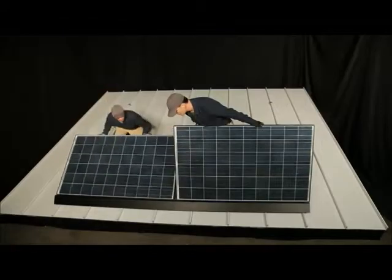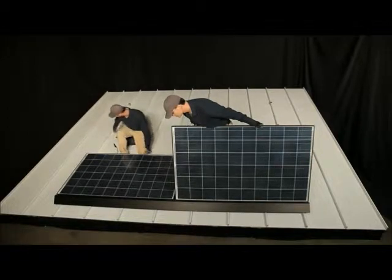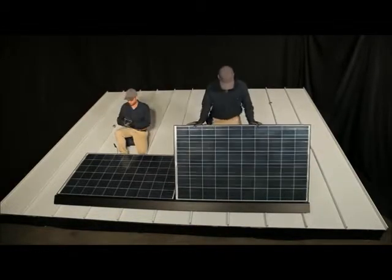Then, pivot the modules downward while applying pressure down roof, causing the module groove to seat on the tongues of the leveling feet and interlocks.